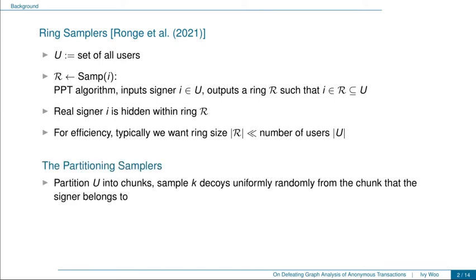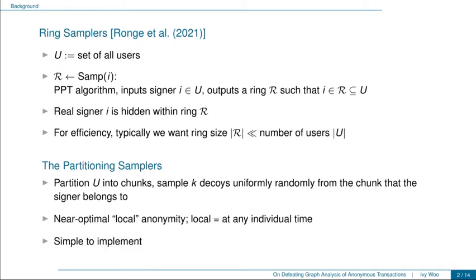The authors further introduced a class of ring samplers called the partitioning samplers. A partitioning sampler would partition the set of all users into chunks, then sample some number K decoys uniformly randomly from the chunk that the signer belongs to. The authors showed that partitioning samplers achieve near-optimal local anonymity, where local refers to anonymity at any individual time. Moreover, a partitioning sampler has the advantage that it is simple to implement in practice.